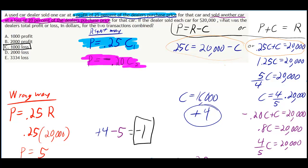I was using P for price, but it's the same thing. So 1.25C equals 20,000. 1.25 is just 5/4, so if you multiply both sides by the reciprocal, you get 4/5 on the other side. When you cancel the 5 and 20,000 to 4,000 and multiply by 4, you get 16,000. So the net profit is $4,000 from that car.